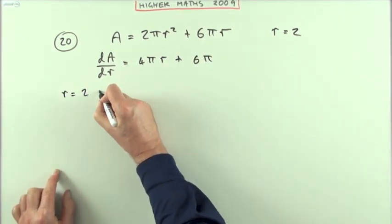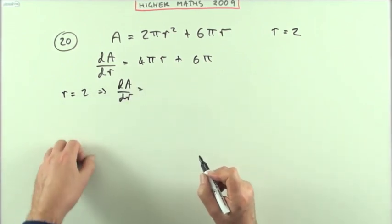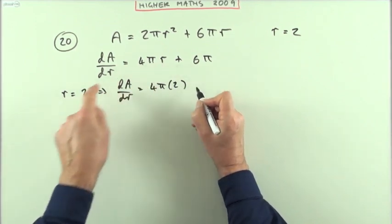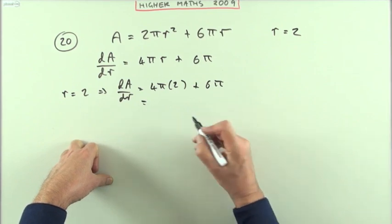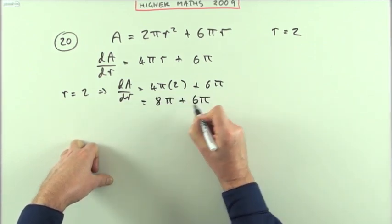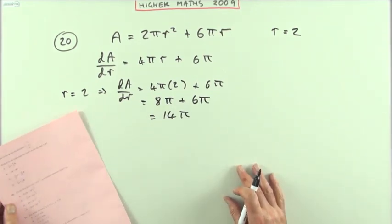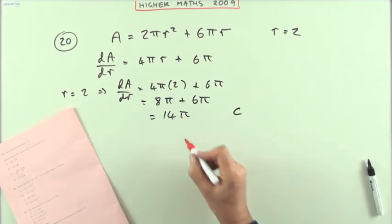And if r equals 2, then my rate of change specifically, that value of r would be 4π times 2, because r is 2, plus 6π. You can see straight away 8π and 6 is 14, I'll put it down. That's 8π and 6π, which is 14π. So which one is that then? That would be C. And there you go. C.